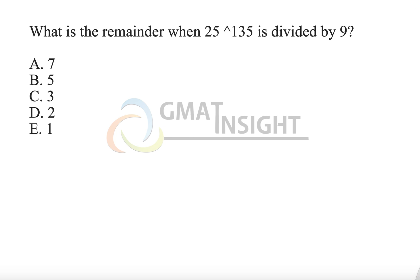In this video we have taken a question to understand how to deal with problems where the numerator is substantially bigger and we need to find the remainder with a denominator such as 9, 10, 12, or 15. The question is: when 25 to the power 135 is divided by 9, what is the remainder?